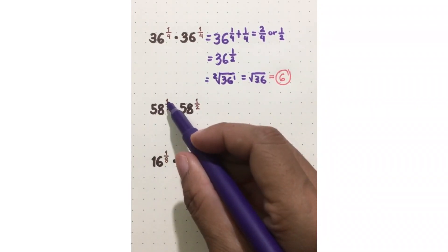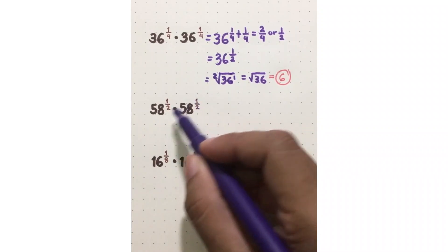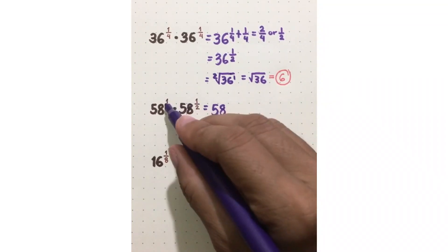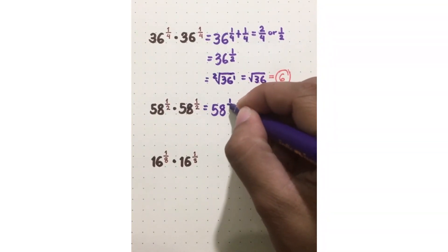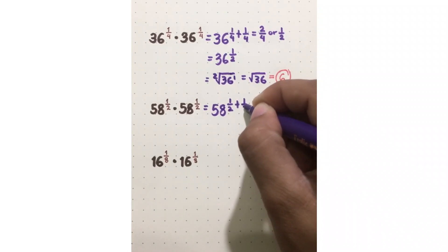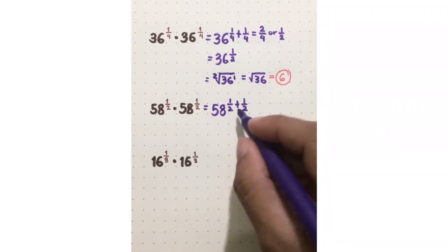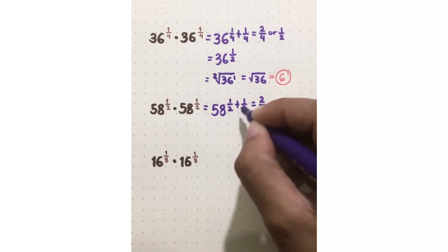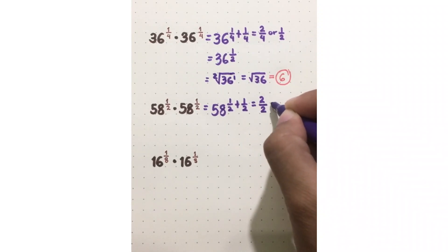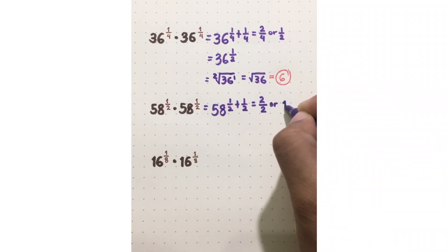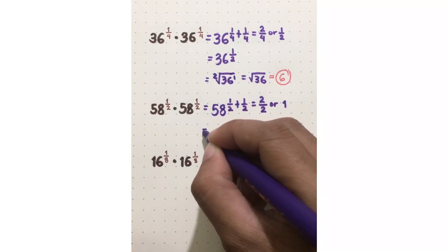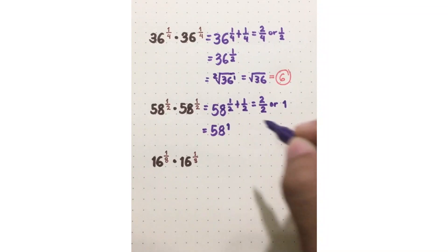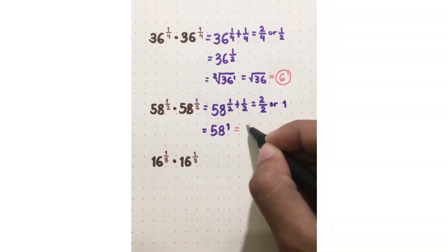Another example: 58 raised to 1 half times 58 raised to 1 half. They have the same bases, so just copy 58, then add the two exponents: 1 half plus 1 half. Since they are similar fractions, add the numerators — 1 plus 1 is 2 — and copy the denominator 2. So 2 over 2 simplifies to 1. Therefore, this will be 58 raised to 1, which is just the same as 58.